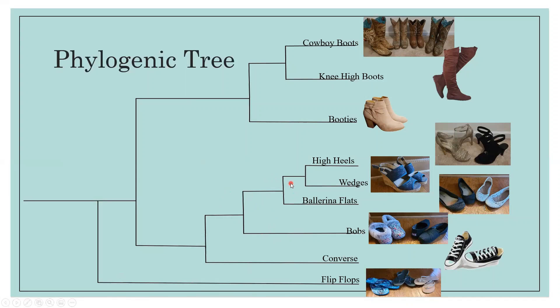Unlike this one, which is an example of cladogenesis, which is species formation that gives rise to two different lines. As you can see here by the high heel and the wedge for this common ancestor, and then right here as well for the cowboy boots and the knee-high boots.